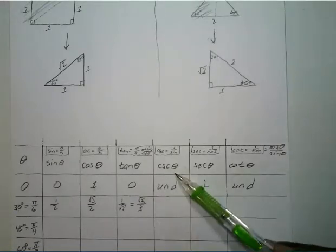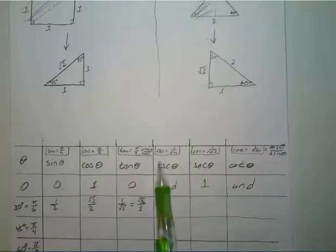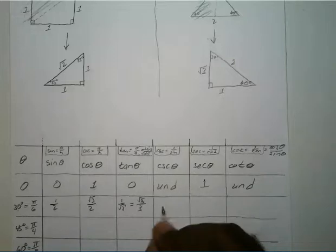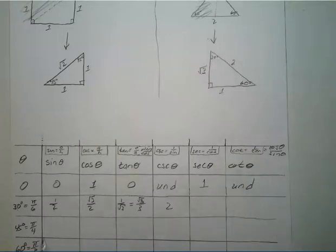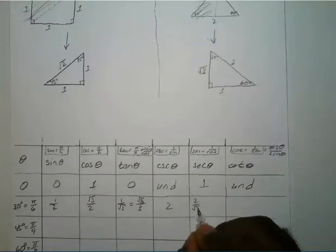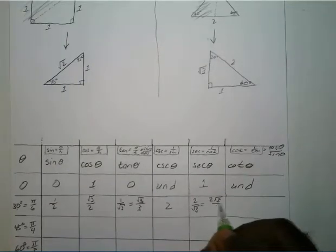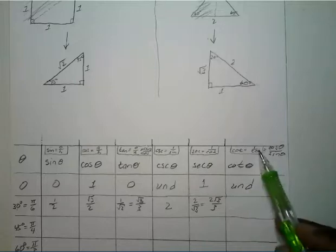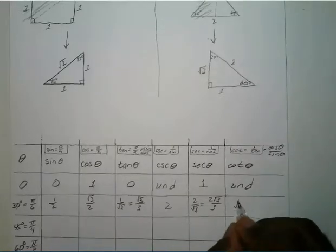For cosecant, secant, and cotangent, we just use the reciprocals. Cosecant is the reciprocal of sine — one half flipped is two. Secant is the reciprocal of cosine — two over square root of three, rationalized to two square root of three over three. Cotangent is the reciprocal of tangent — one over square root of three flipped is square root of three over one, or just square root of three.